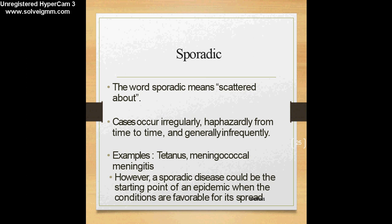Why do we need to think about sporadic conditions? A sporadic disease could be the start of an epidemic when the conditions are favorable for its spread. Just as an endemic can be converted into an epidemic under favorable conditions, a similar concept applies to sporadic disease — right now there are only occasional one or two cases, but if conditions are favorable for the agent to spread, even a sporadic condition can become an epidemic.